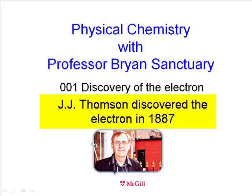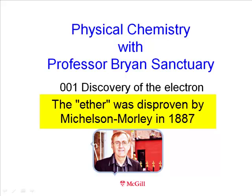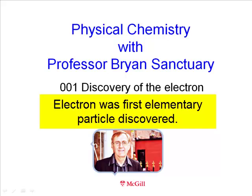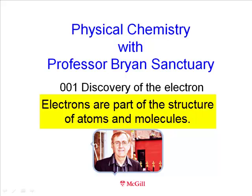In 1887, J.J. Thompson discovered the electron while doing experiments at the Cavendish Lab at Cambridge University. At that time, the fact that nature was made up of atoms and molecules was not fully accepted. Scientists still believed in the ether, which the Michelson-Morley experiment finally disproved, also in 1887. So J.J. Thompson's experiment not only confirmed the existence of one of the most important elementary particles, the electron. He also showed that atoms are not the indestructible building blocks of matter that the Greeks had suggested, but rather parts of the structure of atoms and molecules.